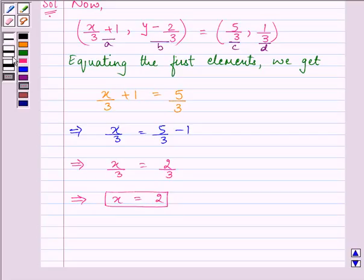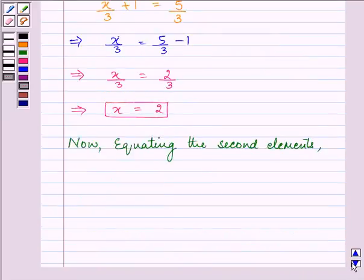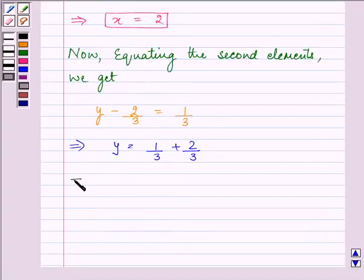Now, equating the second elements, we get y minus 2/3 equals 1/3 which can be written as y is equal to 1/3 plus 2/3 which is y is equal to 3/3